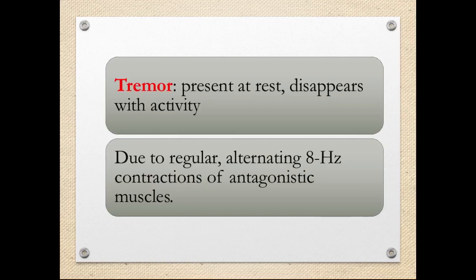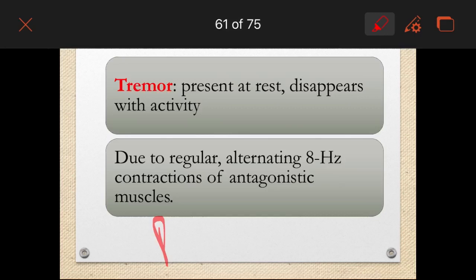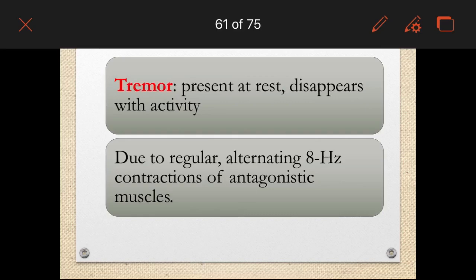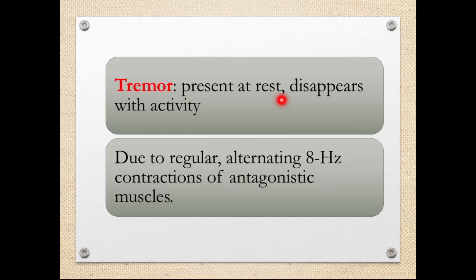Pill-rolling tremor is as if you are holding a tablet in your hand and rolling it between your fingers. This is the characteristic resting tremor of parkinsonism — it is present at rest and disappears with voluntary activity. It is due to regular alternating rhythmic contraction of antagonistic muscles.